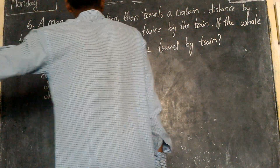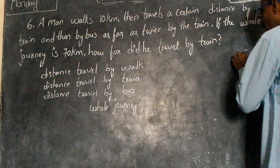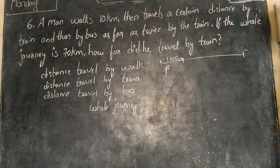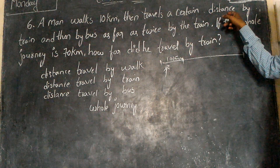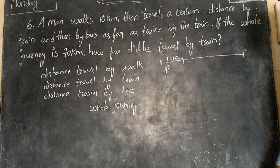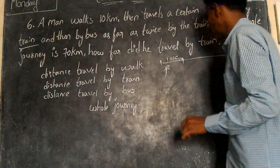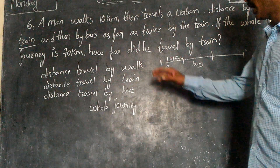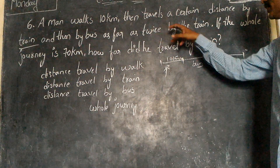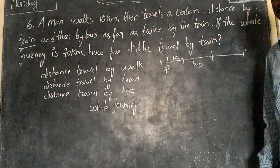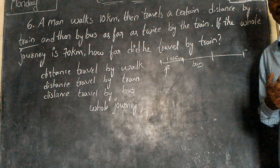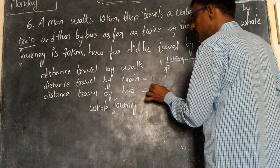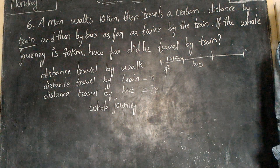A man walks 10 kilometers, then travels a certain distance by train, and then by bus. The bus journey is as far as twice the distance traveled by train. Suppose the train journey is x, then the bus journey is twice x — that is, 2x kilometers.